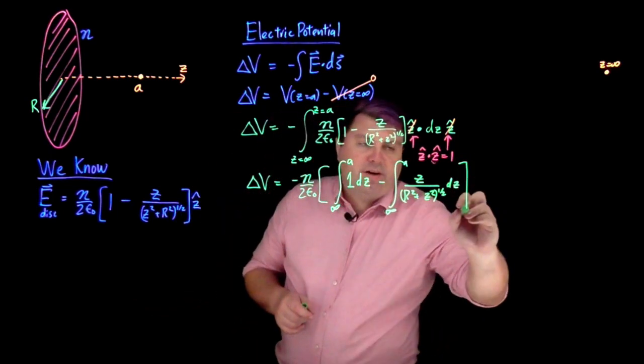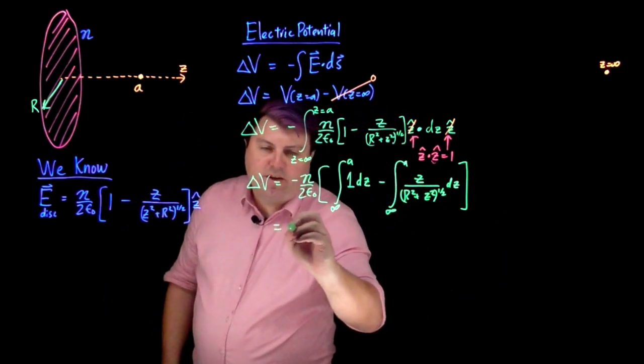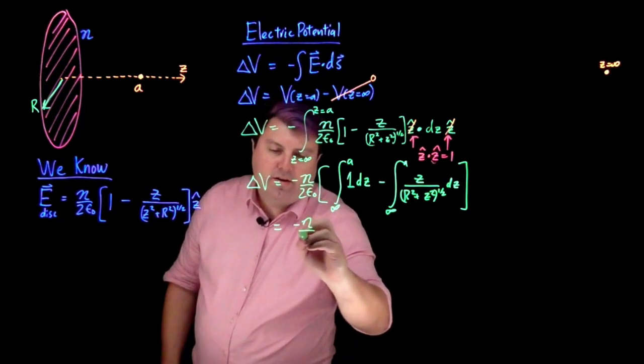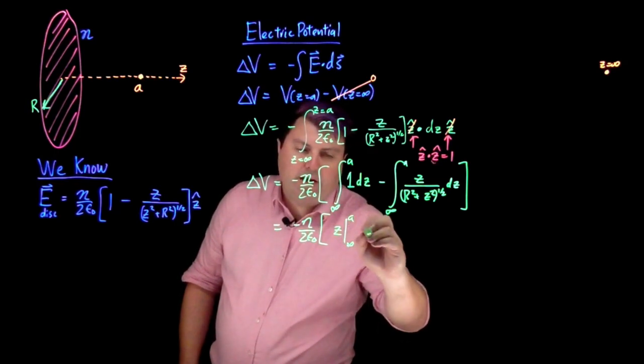One integral is very easy. The other integral, just use integral tables to find. So negative eta over two epsilon not. My first integral is just going to be z from infinity to a.